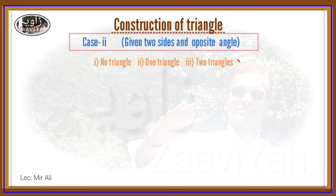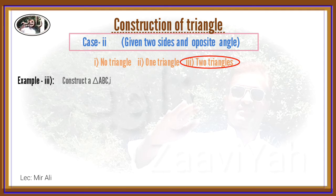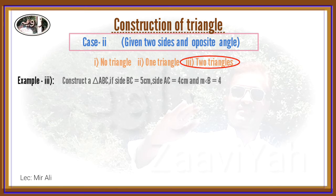From point A to point C draw a line segment and the required triangle is formed. Third example: Construct a triangle ABC if side BC is equal to 5 cm, side AC is equal to 4 cm, and the measurement of angle B is equal to 45 degrees.